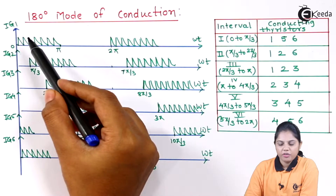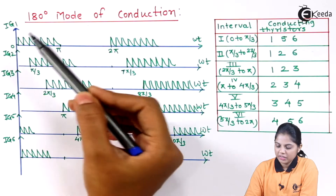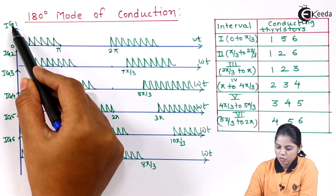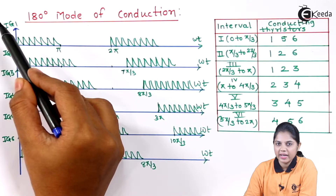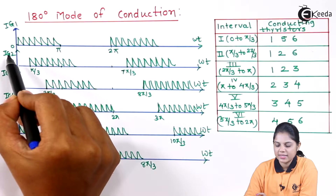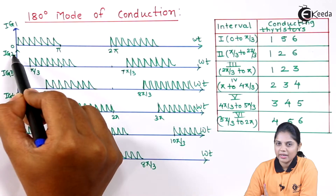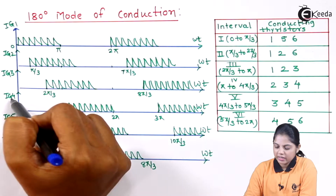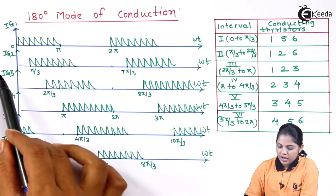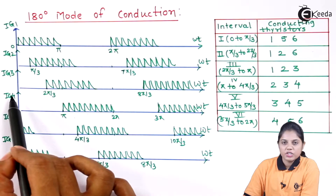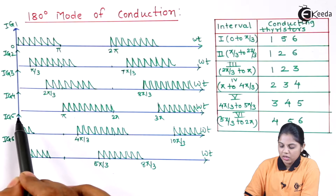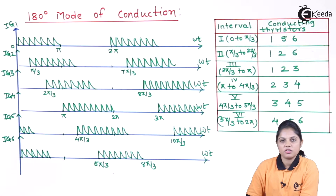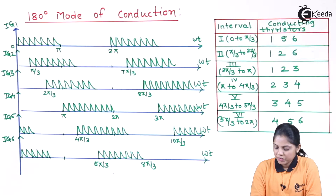These are the different waveforms shown for different gate currents. The first waveform stands for IG1, which is the gate current provided to SCR1. IG2 is the gate current for SCR2, IG3 is for SCR3, IG4 is for SCR4, IG5 is for SCR5, and IG6 is for SCR6.